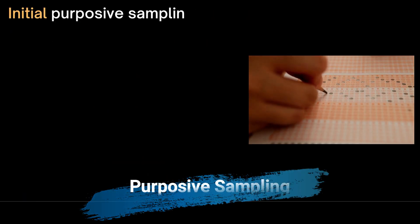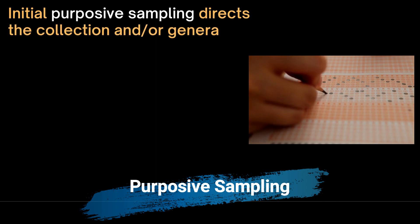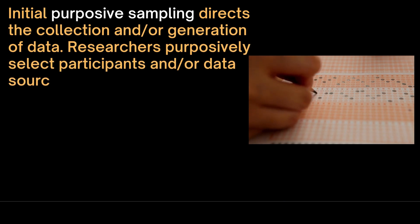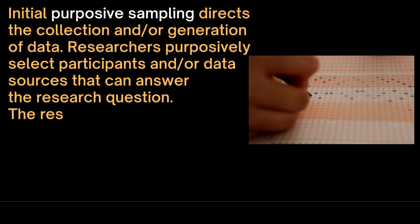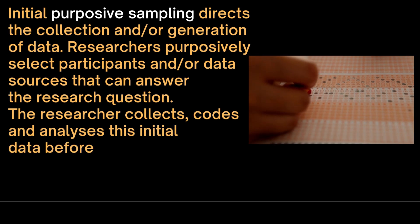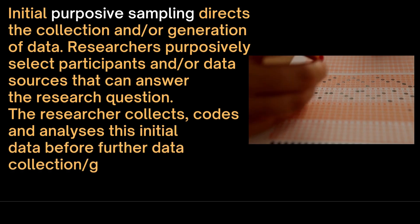Initial purposive sampling directs the collection and generation of data. Researchers purposively select participants and data sources that can answer the research question. The researcher collects, codes and analyzes this initial data before further data collection is undertaken.